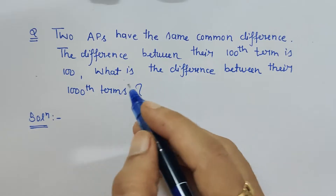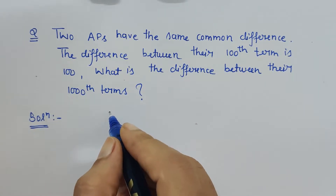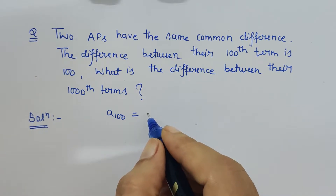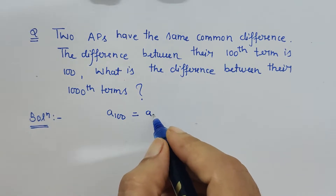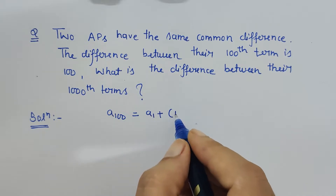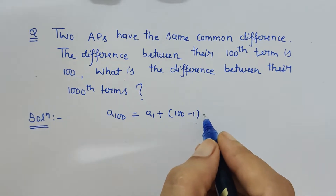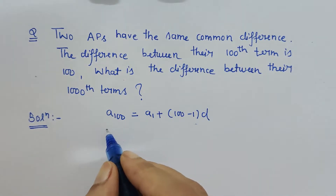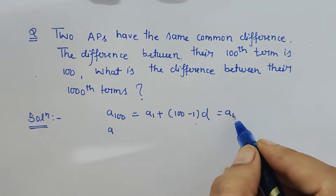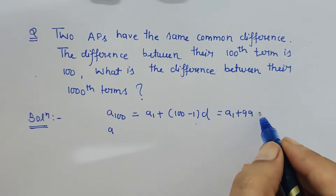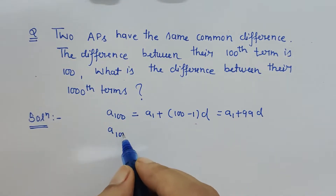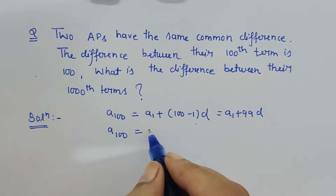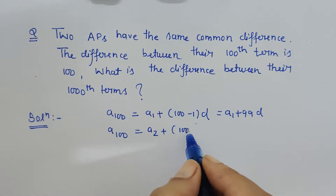We have been given two arithmetic progressions. Let a1 be the first term of the first AP. So the hundredth term is a1 plus (100 minus 1) into d, where d is their common difference — which is the same for both, as given. This simplifies to a1 plus 99d.